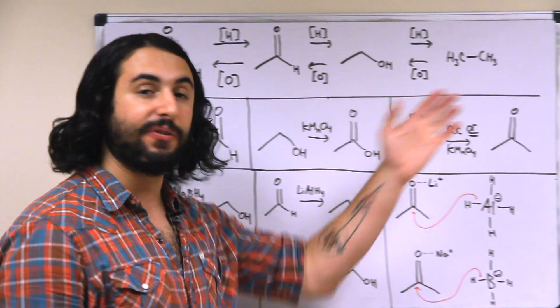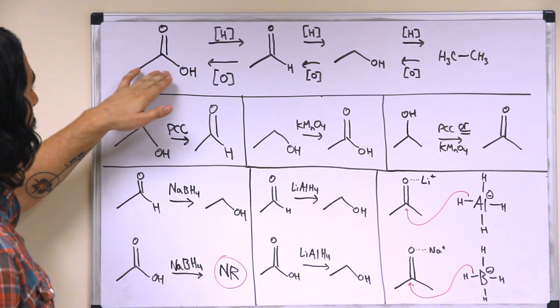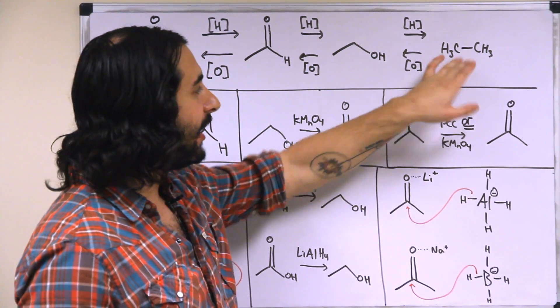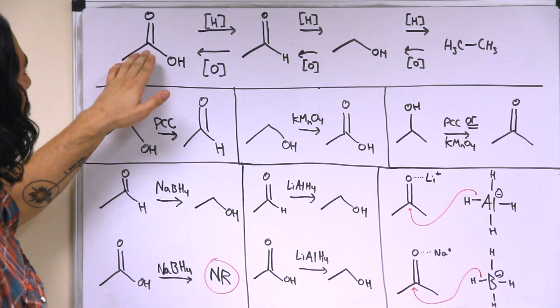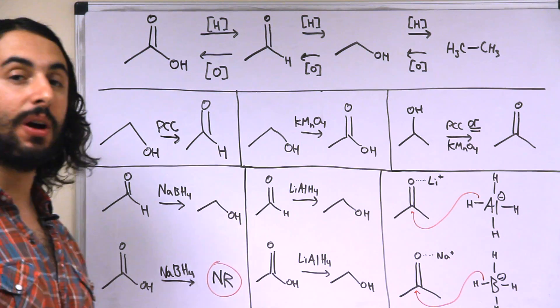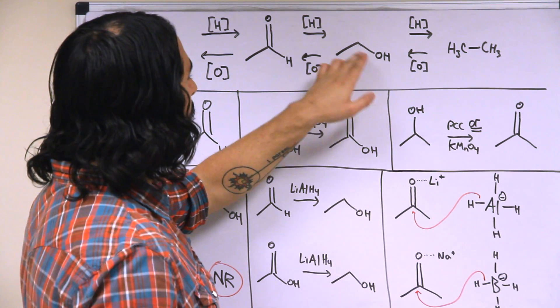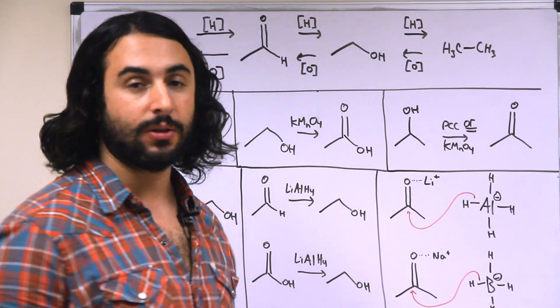So we can see some different functional groups here. Here's a carboxylic acid, an aldehyde, an alcohol, and just an alkane. So here this carbon has three bonds to oxygen atoms, there's one, two, three there. Here it just has two, here this carbon has one, and then none any longer.